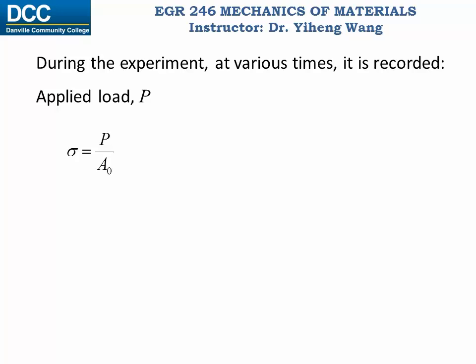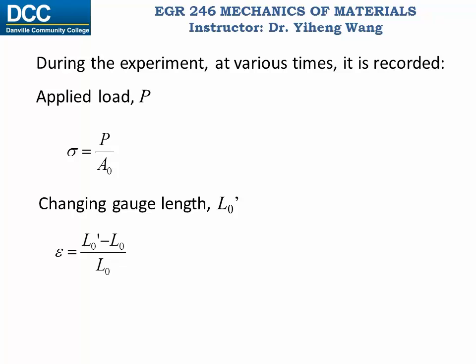Also, the changing gauge length can be recorded at the same time, and from here we can calculate the normal strain, epsilon, which is the new length minus the old length divided by the original length. Both the normal stress and normal strain are functions of time, and we can plot these two variables to get the stress-strain diagram that helps us visualize the stress-strain behavior.